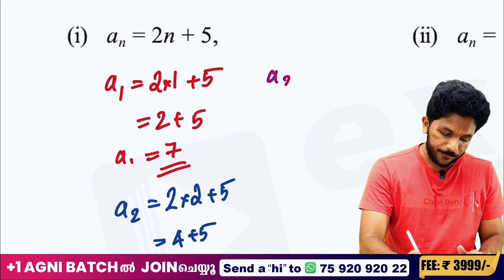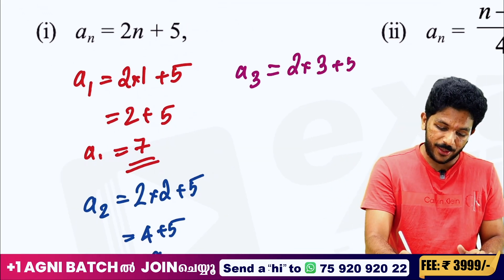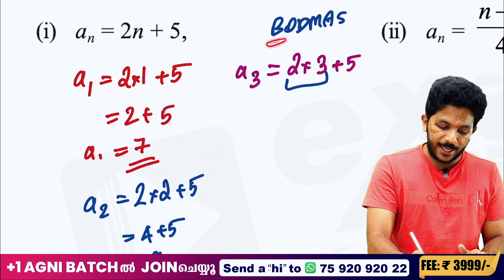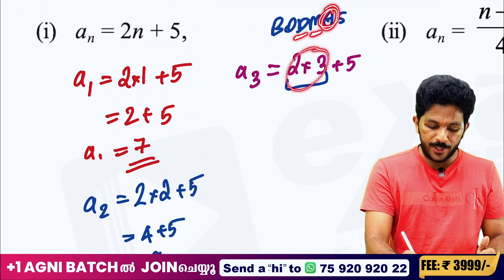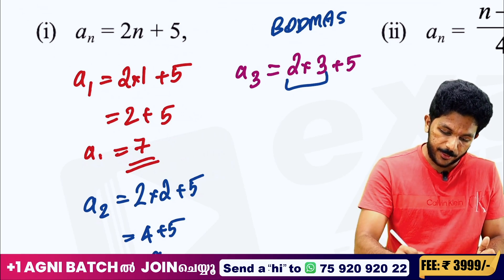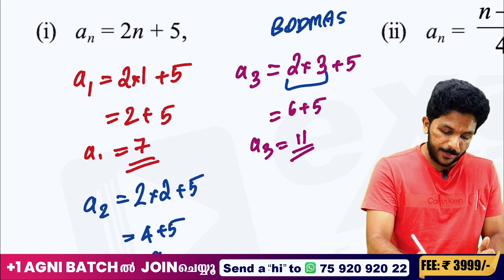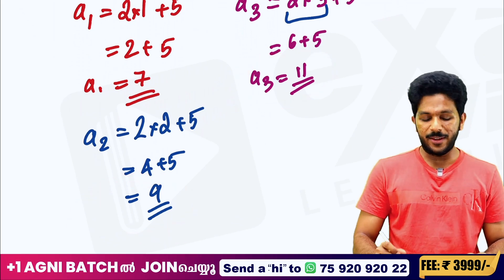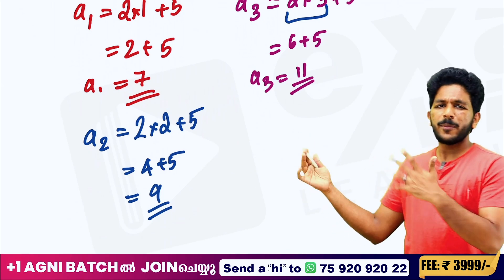This is the third term — A3. A3 is 2 into 3 plus 5. We have to do the multiplication: 2 into 3 is equal to 6, and 6 plus 5 is equal to 11. So the first term is 7, the second term is 9, and the third term is 11 — that is, 7, 9, 11. It is the odd numbers starting from 7.